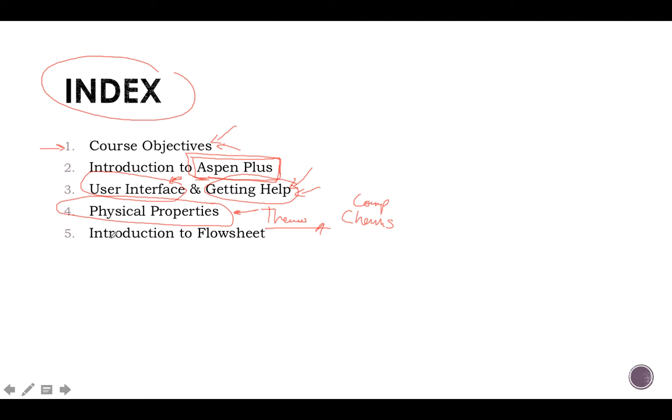Then we go through the introduction of the flowsheet, which is the simulation environment. Once we set our universe, we need to set up our process. It will be how to add streams, how to add units, how to interact with the units, and so on.